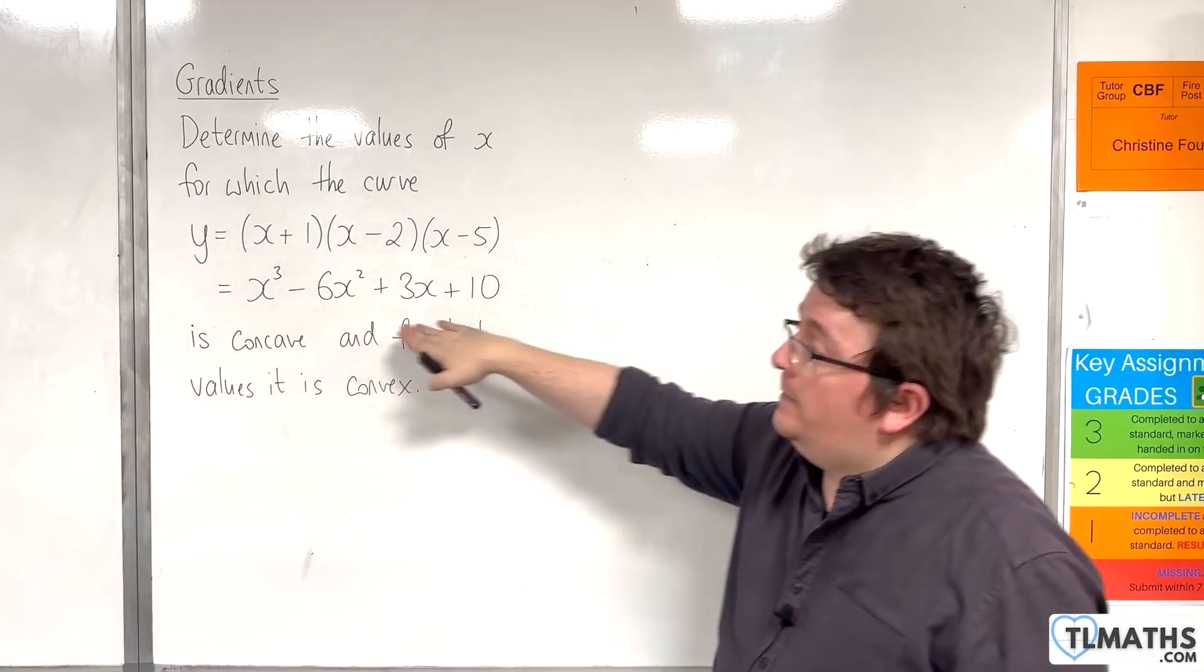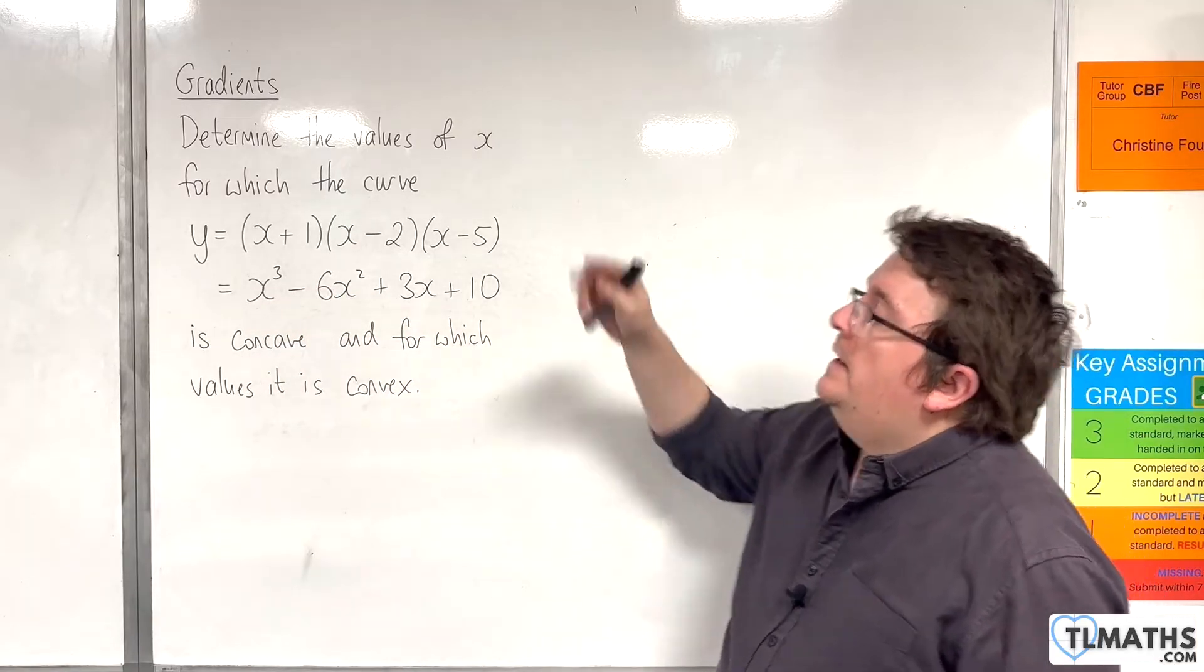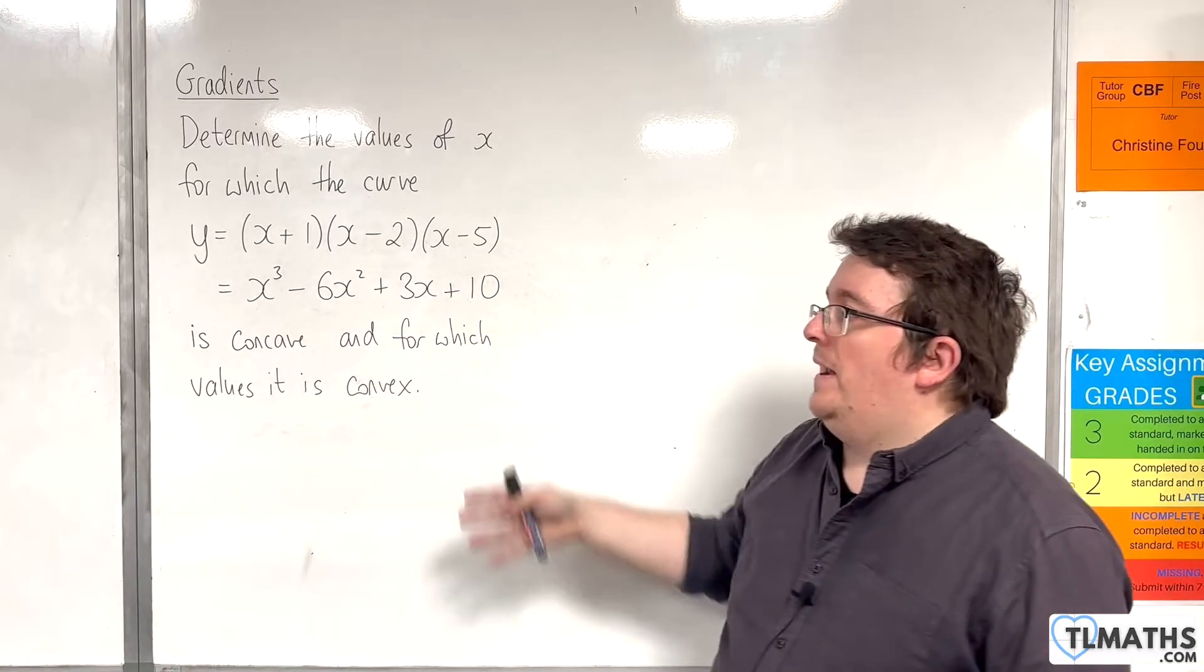and I've expanded it to x³ - 6x² + 3x + 10, is concave, and for which values it is convex.